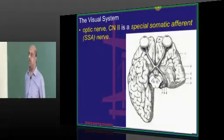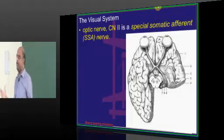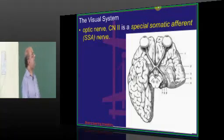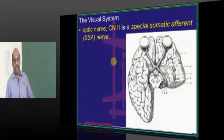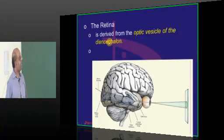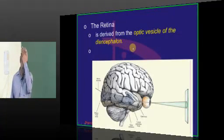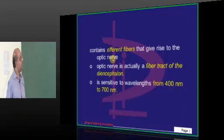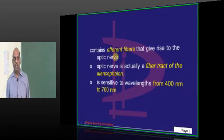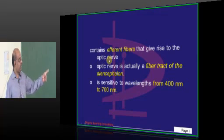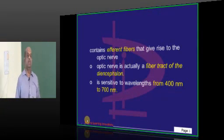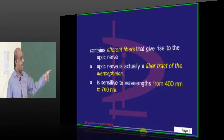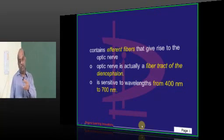Let us talk about the visual system, which we have already covered. I'll try to go a little faster. The optic nerve, cranial nerve 2, is a special somatic afferent. Look at the retina - embryologically, it comes from the optic vesicle of the diencephalon. It contains efferent fibers that give rise to the optic nerve. Honestly, we should not call it a nerve. The optic nerve is actually a fiber tract derived from the diencephalon.